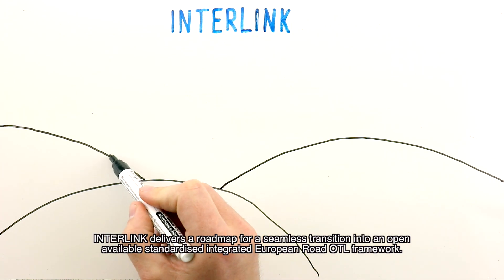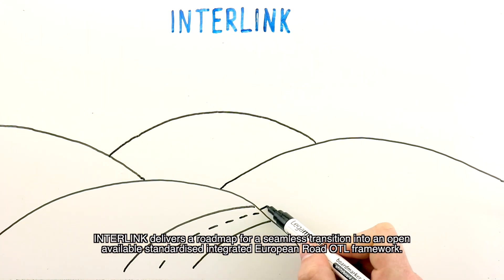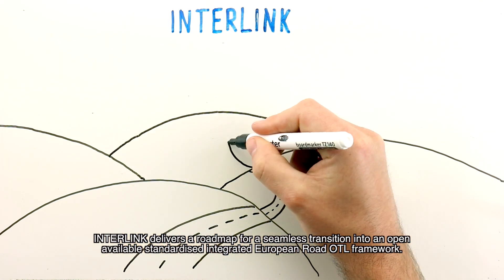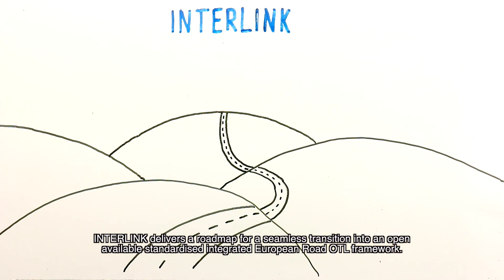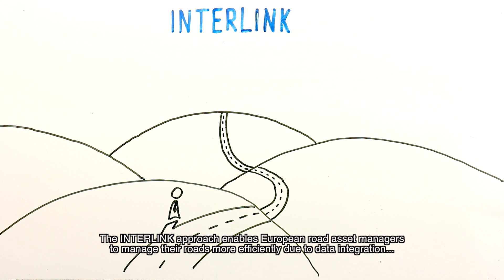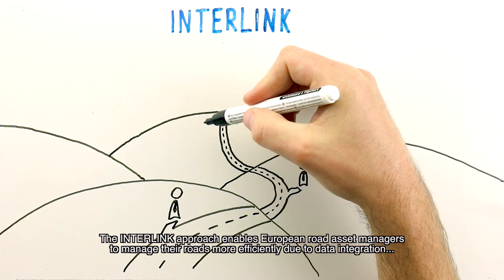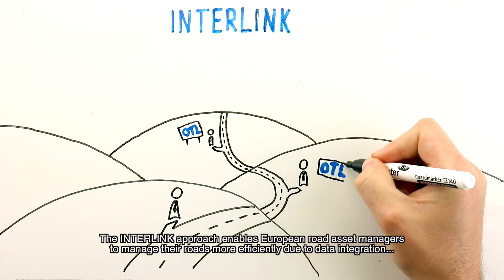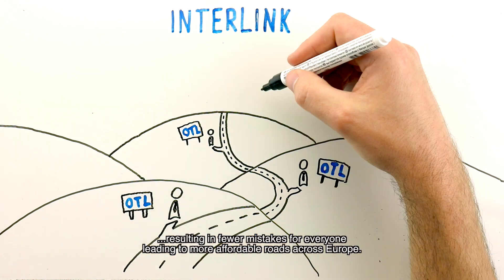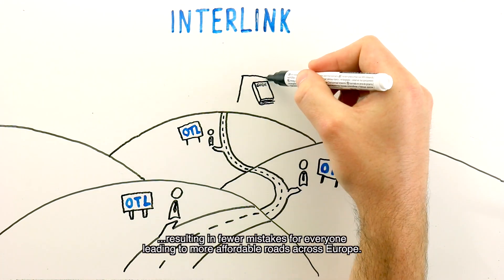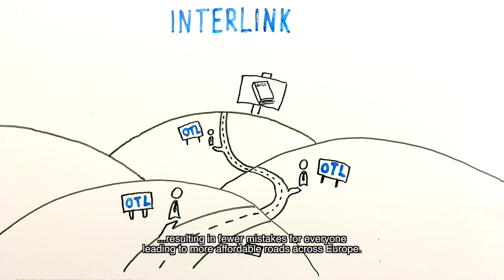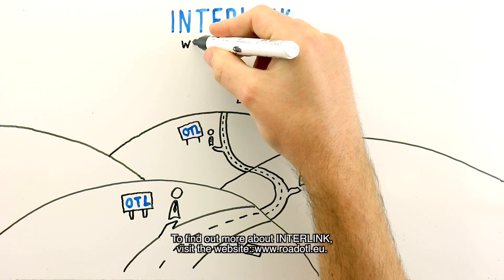Interlink delivers a roadmap for a seamless transition into an open, available, standardized, integrated European Road OTL framework. The Interlink approach enables European road asset managers to manage their roads more efficiently due to data integration, resulting in fewer mistakes for everyone, leading to more affordable roads across Europe.